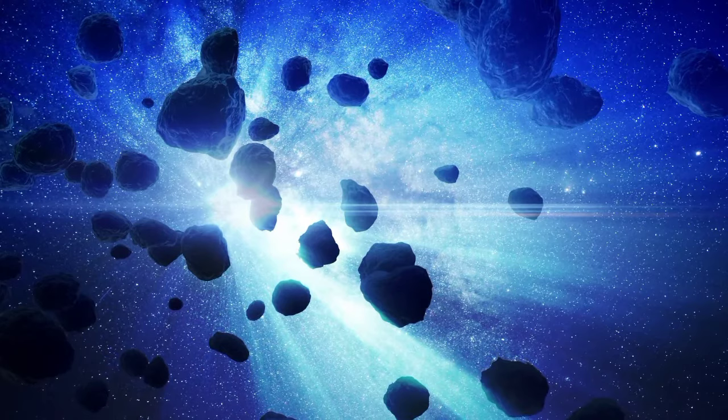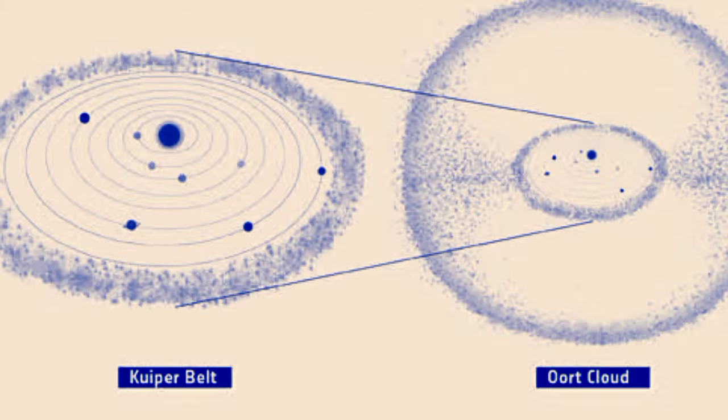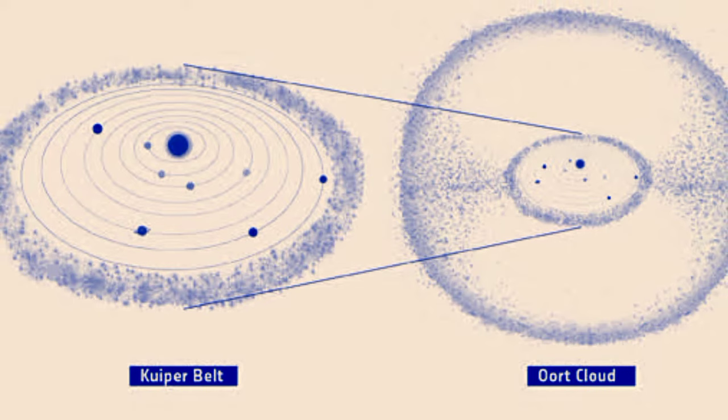The Oort cloud is similar to the Kuiper belt; both are the sites of comets, asteroids and dwarf planets. But there are a few differences. These two regions vary primarily in terms of distance and location. The Kuiper belt orbits in approximately the same plane as the planets, ranging from 30 to 50 times as far from the Sun as Earth. But the Oort cloud is a shell that surrounds the entire solar system and is a hundred times as distant.